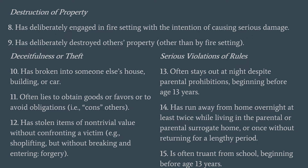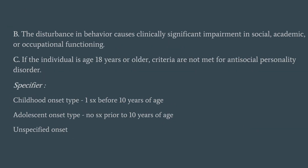The fourth category is violation of rules. The patient often stays out at night despite parental prohibitions, beginning prior to the age of 13. They have run away from home overnight at least twice while living in the parental or surrogate house, or at least once without returning for a lengthy period of time. The last criterion is truancy in school, which begins prior to the age of 13. These behaviors cause clinically significant impairment in social, academic, and occupational functioning. If the individual is 18 years or older, the criteria should not be better met by antisocial personality disorder.